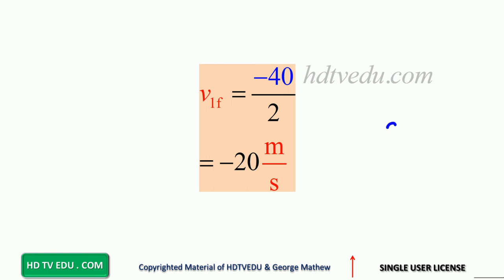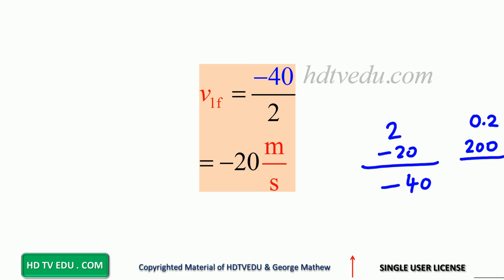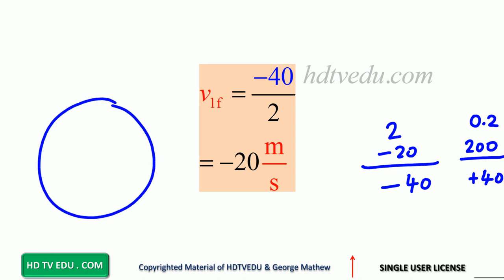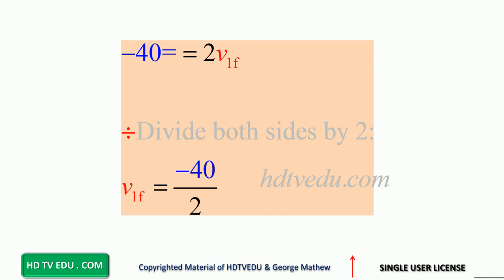The mass of the gun is 2 kg, the velocity of the gun is negative 20 m/s, so its momentum is negative 40. The mass of the bullet is 0.2 kg, the velocity of the bullet is 200 m/s, so its momentum is positive 40. The total momentum before firing is 0, and negative 40 plus 40 equals 0. The velocity of the gun is 20 meters per second to the left.